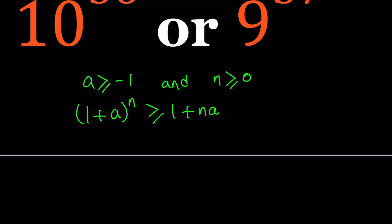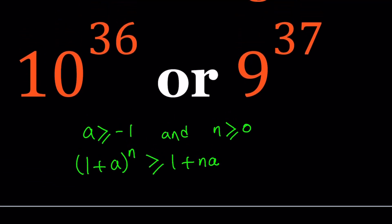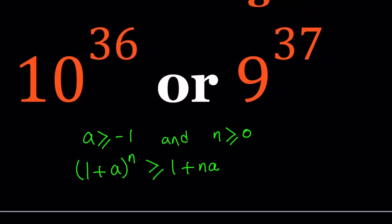If n is equal to 0, you get (1 + a) to the power 0 equals 1, so you get equality when n is equal to 0. Let's see how we can use this to solve this problem and compare these two numbers — that's the inequality we're going to use.